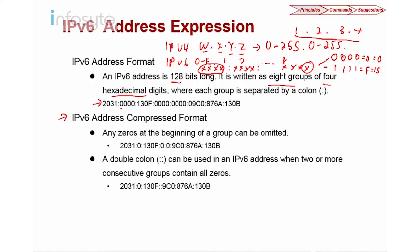Even after that compression it's still pretty long, so we can shorten it further using a double colon, which represents one or more consecutive groups of all zeros. Please remember that we cannot use a double colon more than once in a single address — it would be invalid. This is the IPv6 address expression format.